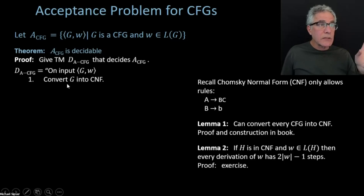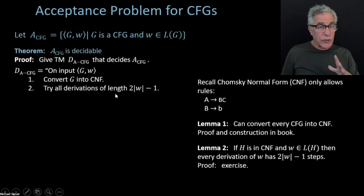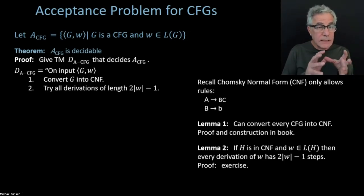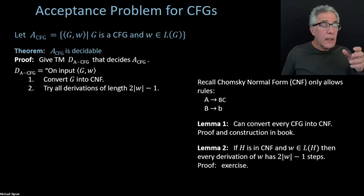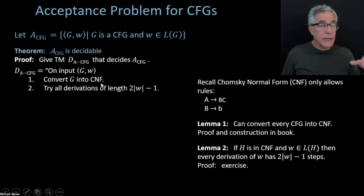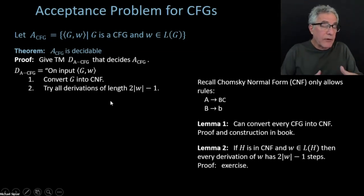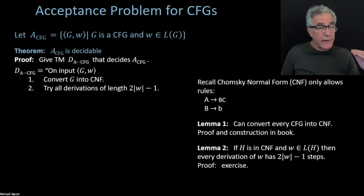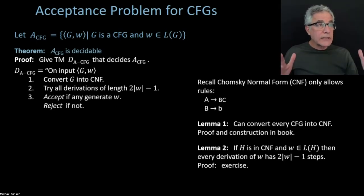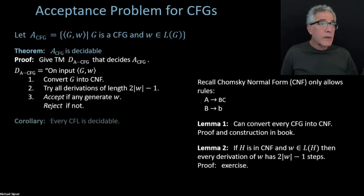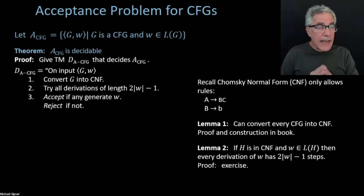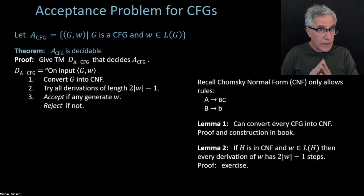Here's the Turing machine: first convert G into Chomsky Normal Form, then try all derivations of length exactly 2|W|−1. If any derivation generates W, accept; otherwise reject. This converts an unboundedly long problem into one that terminates after a fixed number of steps. This shows the ACFG language is decidable.